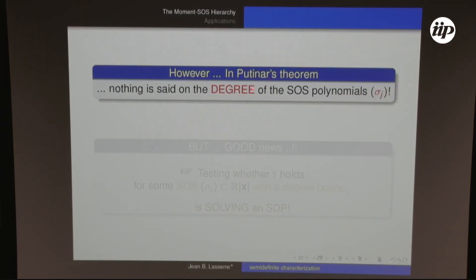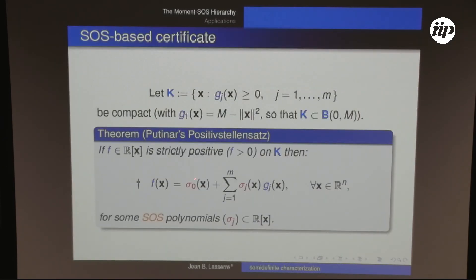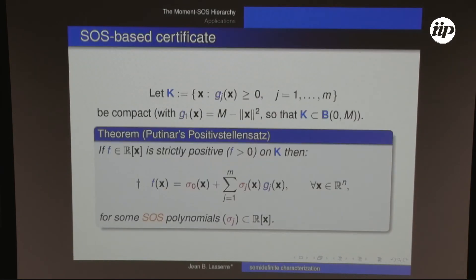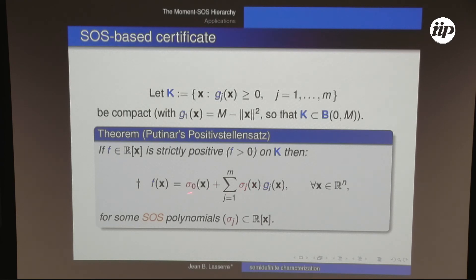Something to be careful about when reading this theorem: nothing is said about the degree of the SOS weights. For example, f could be quadratic and g_j could be quadratic, and even though f is a positive quadratic function, you might need weights of degree perhaps 20,000. Because of cancellations, all high-degree coefficients vanish, but those weights can be very high degree polynomials. That's why there is no nice bound on the degree given the degree of f and the g_j — otherwise, you would have proved that P equals NP.